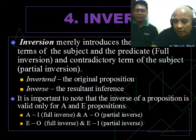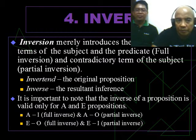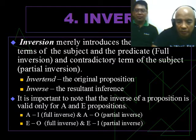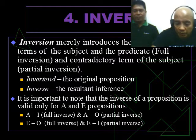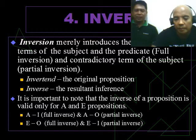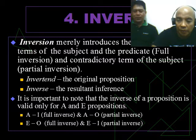This is the last of the sequence. Just like obversion, conversion, partial contraposition, we have the given proposition or the original proposition as the invertend and its resultant inference which we call inverse. Now it's important to note that the inverse of a proposition is valid only for A and E.